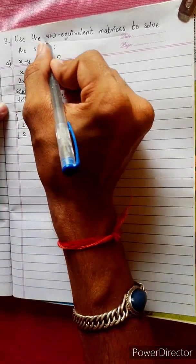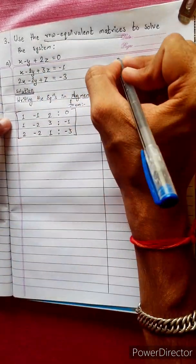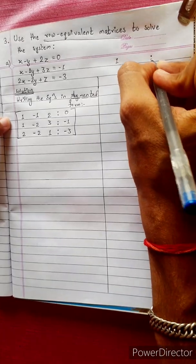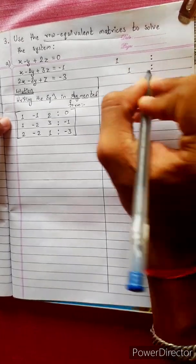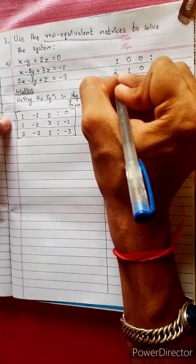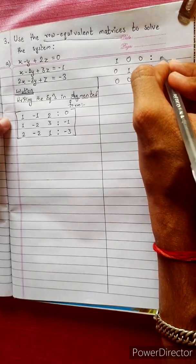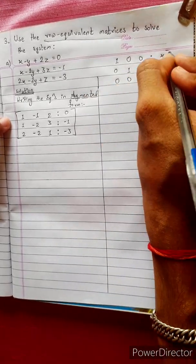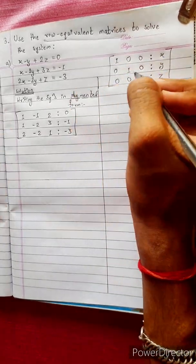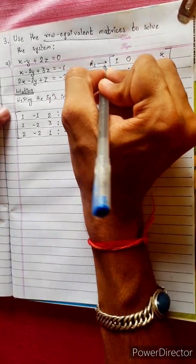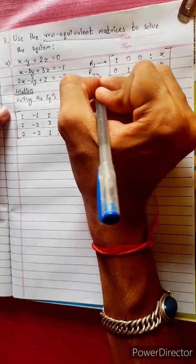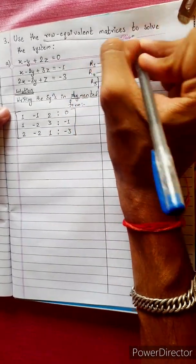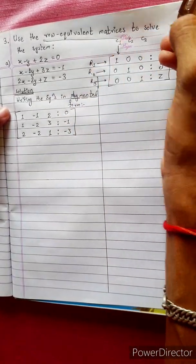Now, the Row Equivalent Matrix Method. How do you compare the main diagonal? The main diagonal should be 1, and the remaining terms should be 0. If you achieve that, you can compare it to x, y, z. This is R1, R2, R3, and the 1st, 2nd, 3rd, and 4th columns.